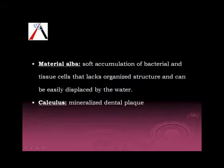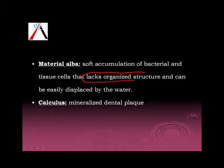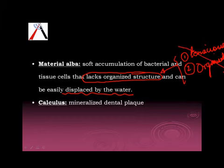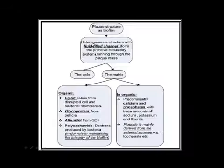Next we come to Materia alba. Materia alba is a soft accumulation of bacterial and tissue cells that lacks organized structure. Although it has bacteria and tissue cells, it lacks organized structure and can be easily displaced. The main things about plaque were that it was tenacious and organized — these two points are lacking in Materia alba. Calculus is nothing but mineralized dental plaque.